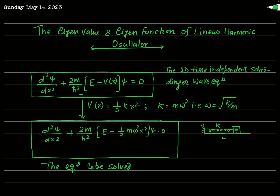Since the mass is oscillating simple harmonically and the spring is assumed to be massless, the potential energy function V(x) is ½kx². The frequency of oscillation is ω = √(k/m), so the force constant k = mω². Therefore V(x) is replaced by ½mω²x².